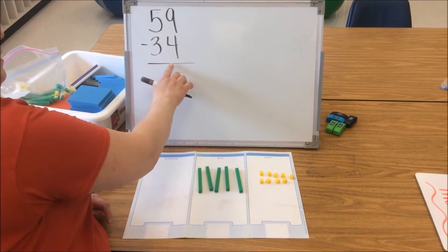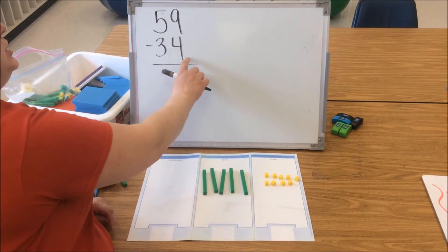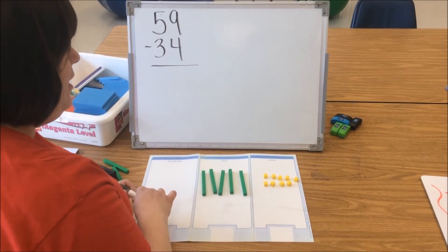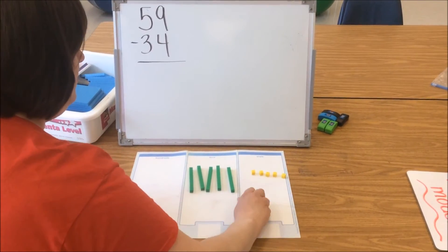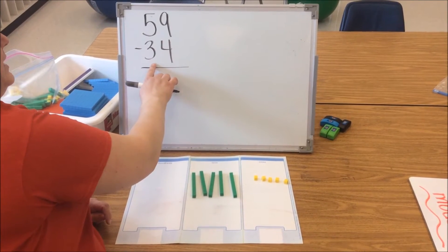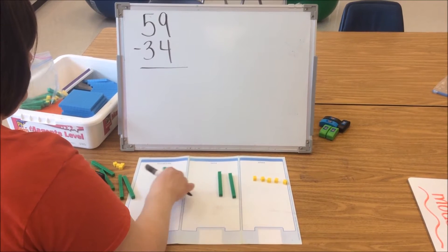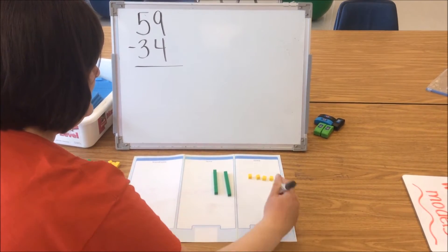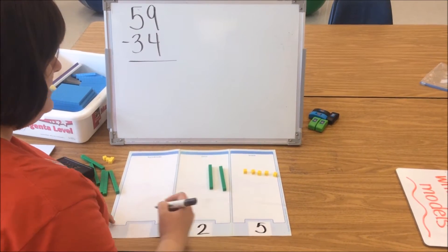Now we're going to look at our problem. We know we need to take away 34. We're going to start in the 1s place — I'm going to take away 4 of my 1s: 1, 2, 3, 4. Now I'm going to take away 3 of my 10s: 1, 2, 3. And I write what is left — I see I have 5 ones and 2 tens.